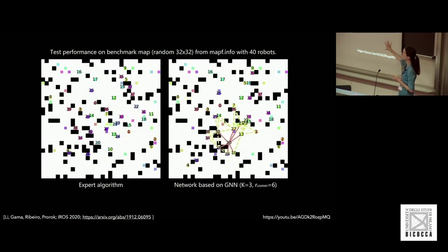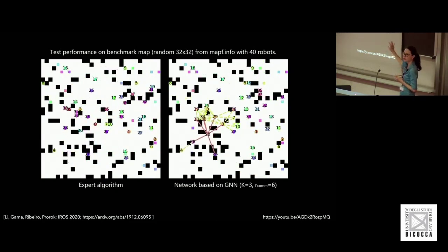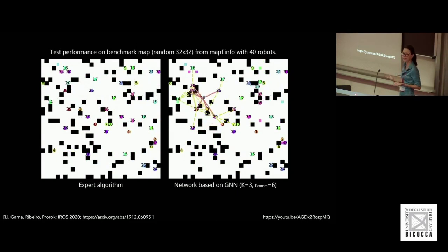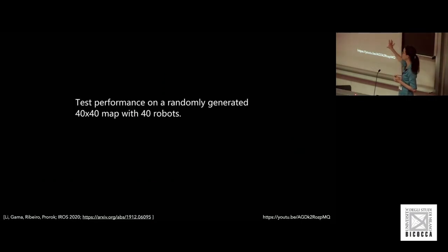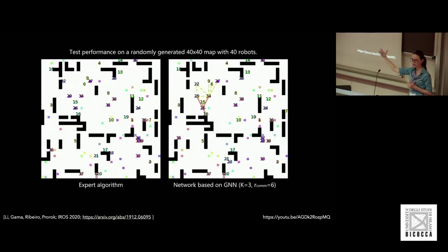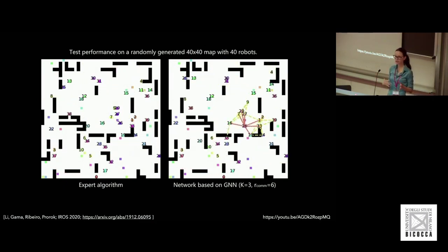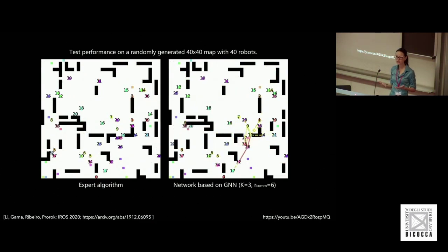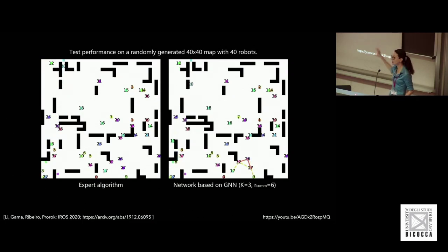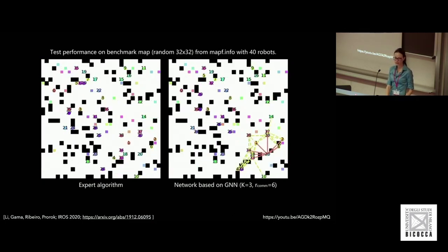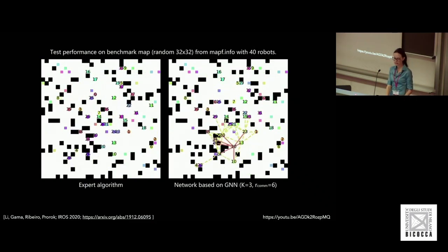Since we're just running inference, this scales arbitrarily — it's O(1) per robot, not O(N). The expert solver — CBS, conflict-based search — times out at 10 minutes for around 40 to 45 agents. That's why we're so excited about using learned policies running inference to deploy these systems at scale.